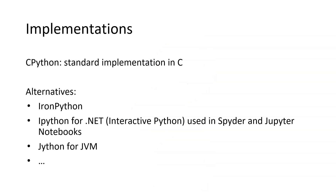Python implementations are coded in different ways. There is the standard implementation in C — the standard code of Python — but there are also alternatives developed for different purposes. An important one that we will use is IPython, or Interactive Python, which makes it possible to execute Python in an interactive way, such as in Jupyter Notebooks. There's also Jython, which is for Java virtual machines.